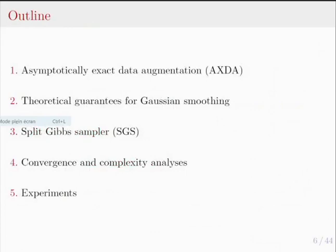The outline is as follows: I will first present an approximate statistical framework that transforms the target posterior into an approximate posterior, with theoretical guarantees on the approximation under various assumptions. I will then present efficient sampling based on this approximate posterior with convergence and complexity analysis, and finally present experiments in image processing.